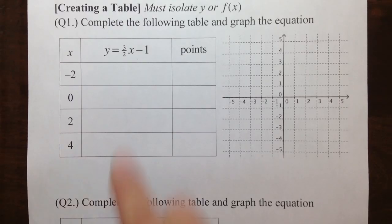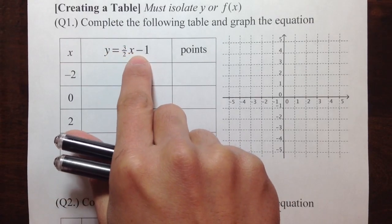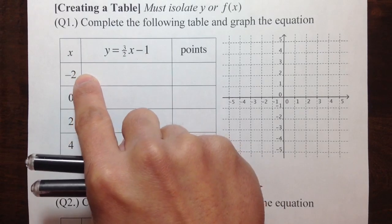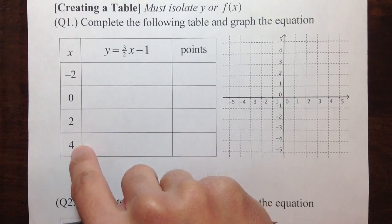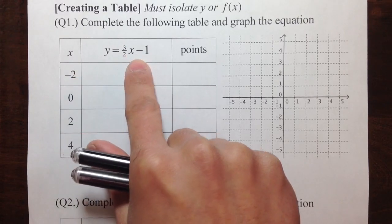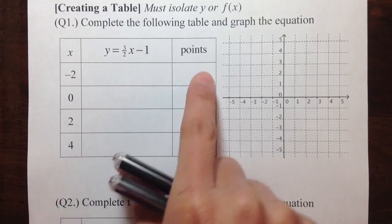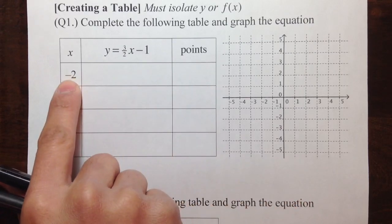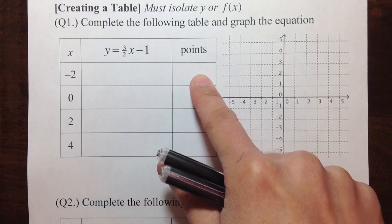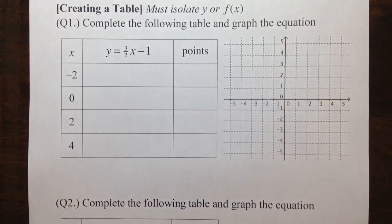Now we are going to do some graphs. We have the equation y is equal to 3 halves x minus 1, and we are also given the x values negative 2, 0, 2, and 4. So what we can do is just plug in these numbers into the x values, do the computations, and we can get the points. When we have the x value and the y value, we will have the point. Then we can just plug in the point into the graph, and then connect the dots.